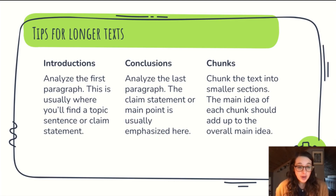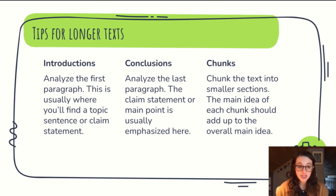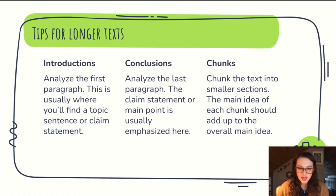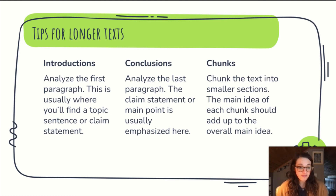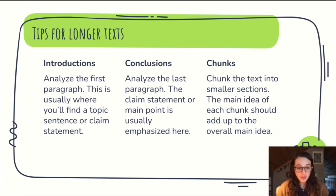Analyze the first paragraph — this is usually where you'll find a topic sentence or a claim statement, and if you can identify that, you have found the main idea. You can also look at the conclusion, the last paragraph, where the main statement or claim is usually emphasized or repeated. The other tip is to chunk the text — split it into smaller sections. Once you have an article split into, say, three chunks or three paragraphs, you can look at each chunk individually, figure out the main idea of each chunk, and then those will add up to the overall main idea.